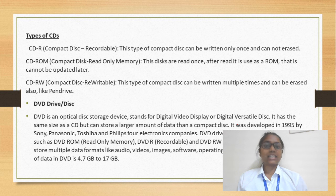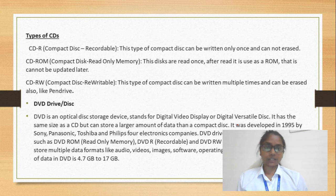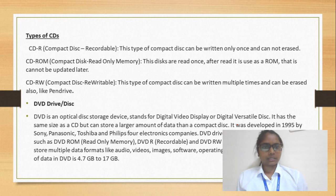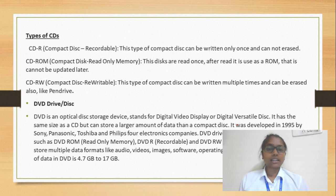The second type is CD-R, which stands for Compact Disc Recordable. We buy a blank CD and can record data on it, but only once. The third is CD-RW, which stands for Compact Disc Rewritable, meaning we can read, write, erase, and re-program data on it multiple times.